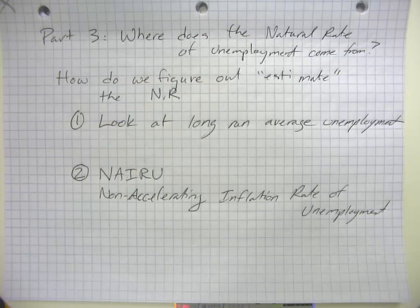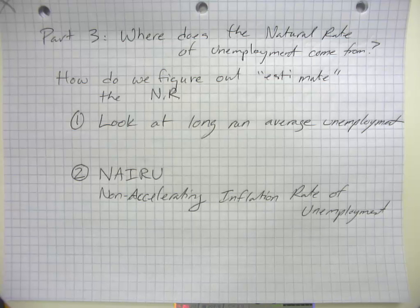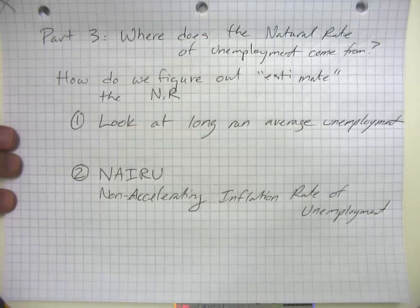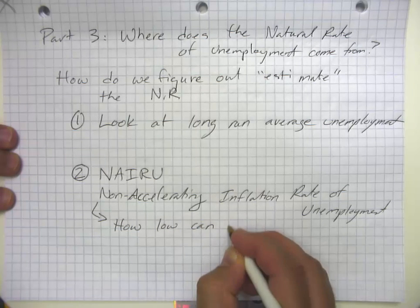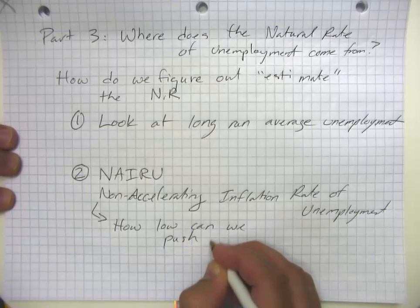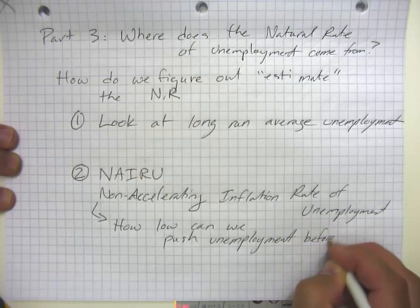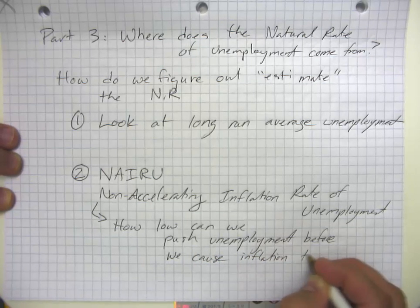At the same time, as firms produce more, they're going to run up against production constraints and their costs are going to rise. And even if their costs don't rise that much, as we demand more of them, they're going to have the temptation to raise prices because our demand will be higher, and higher demand leads to higher prices. So the question is: how low can we push unemployment before we cause inflation to accelerate?